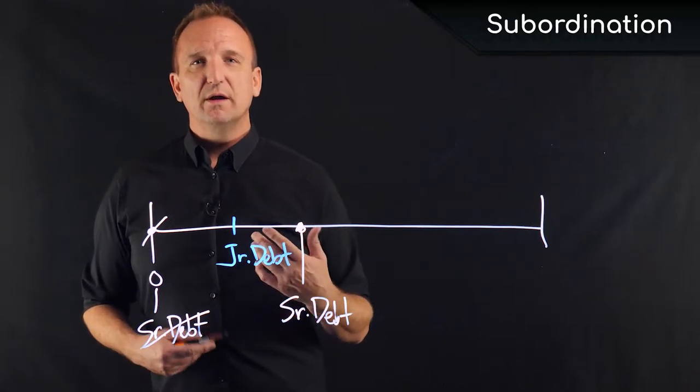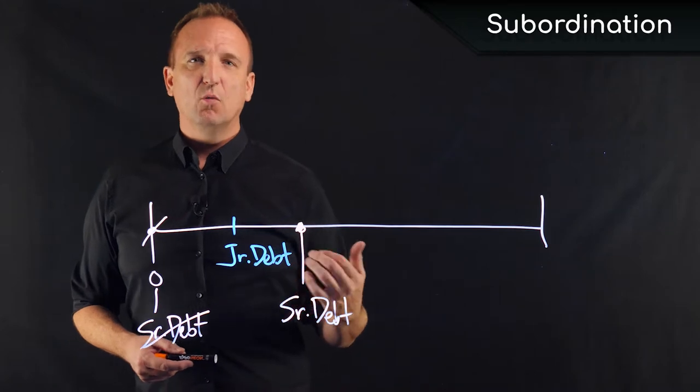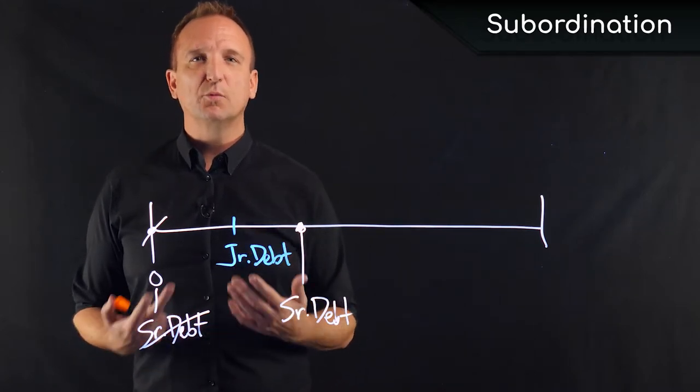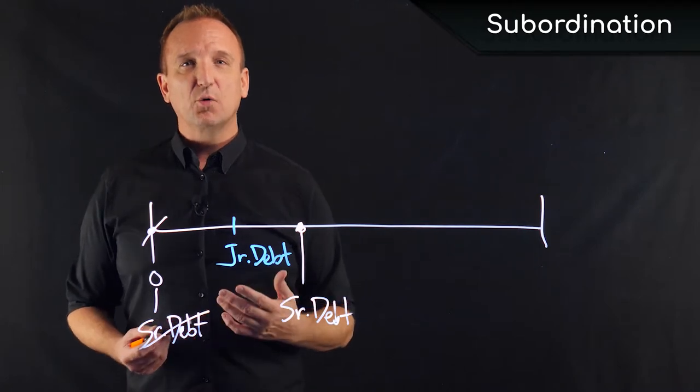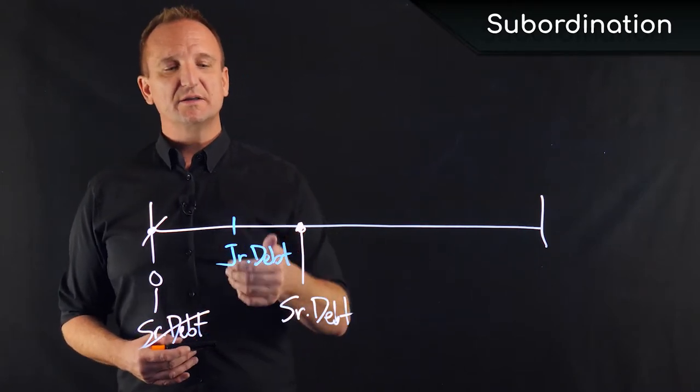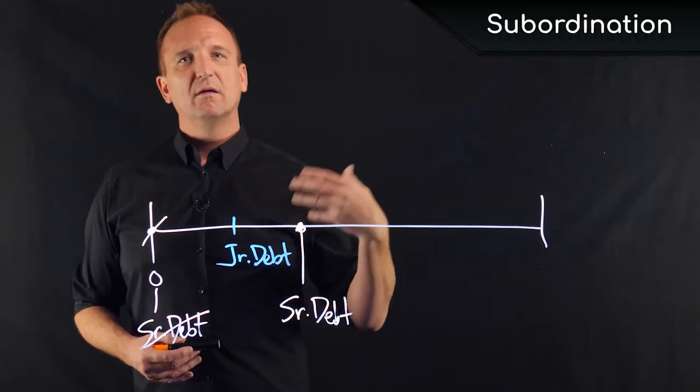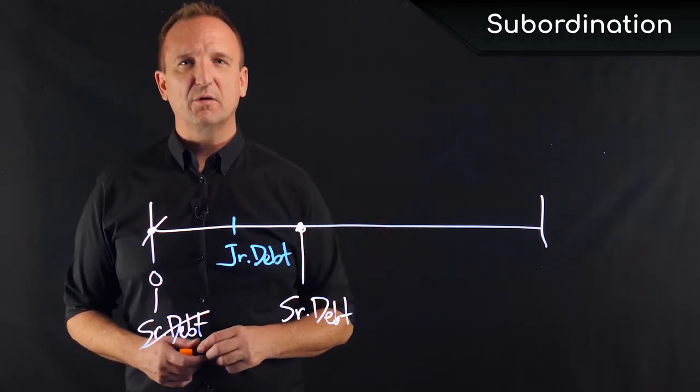So in this case, typically senior debt holders will require that the junior debt holders sign what's called a subordination agreement. And subordination agreements effectively say, we as the junior debt holder agree to subordinate behind whoever is executing the subordination agreement.